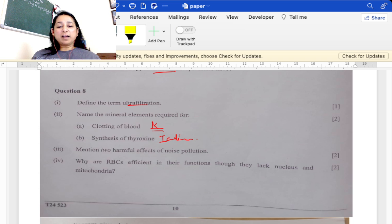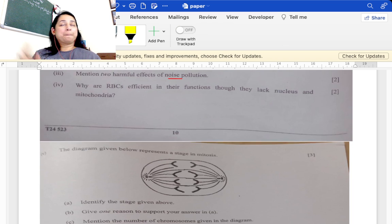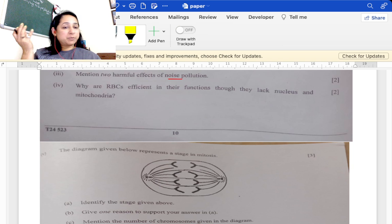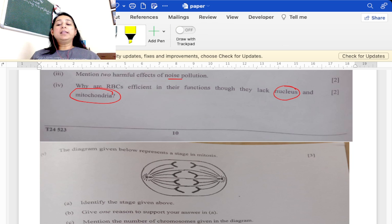Mention two harmful effects of noise pollution: it leads to hearing imbalance, rupture of ear drum or tympanum. It can also lead to stress and high BP. Why RBCs are efficient in their function? Due to lack of nucleus and mitochondria. You had to write complete: it is devoid of nucleus so that it can carry more amount of oxygen and no mitochondria so it does not use any energy for itself. All the oxygen which is there is transported, it doesn't keep anything. That is why its efficiency increases.